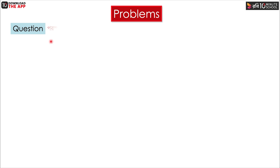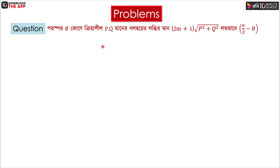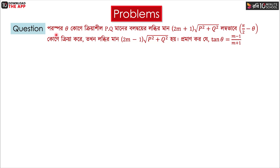Let me see this first. I will see the question. The question is: theta minus pq is equal to 2m plus 1 root of p squared plus q squared. As we say, we have to write a long term like this: pi by 2 minus theta minus.